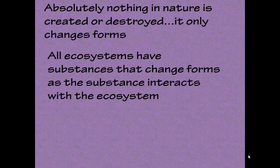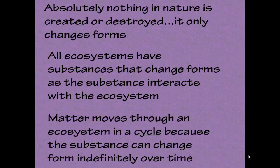Every ecosystem out there has substances that change forms as the substance interacts with the ecosystem. Whether it's carbon, nitrogen, or water, certain things are going to happen to it and then the form is going to change. Matter moves through an ecosystem in a cycle because that substance is going to change form indefinitely over time — it's a cycle that's always constantly going and never really ending.